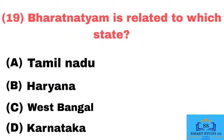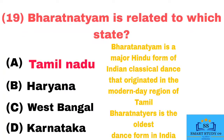Q19. Bharatnatyam is related to which state? Answer: Tamil Nadu. Bharatanatyam is a major Hindu form of Indian classical dance that originated in the modern-day region of Tamil Nadu and is the oldest classical dance form in India.